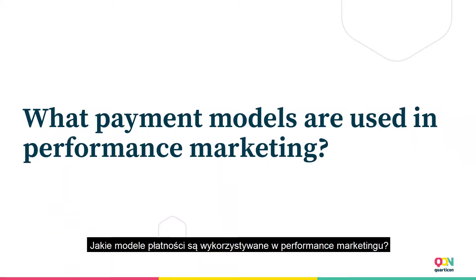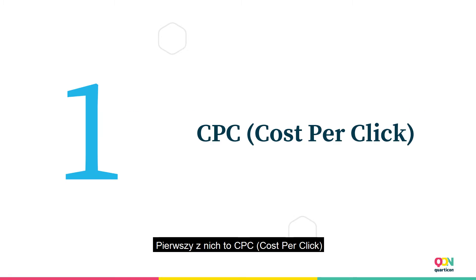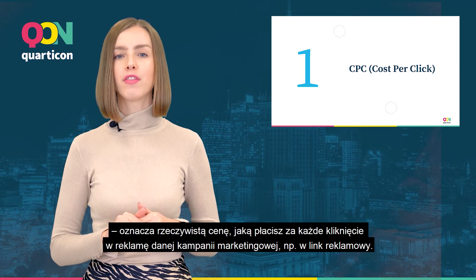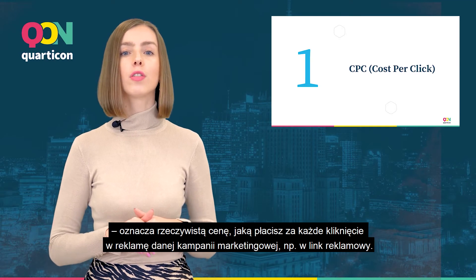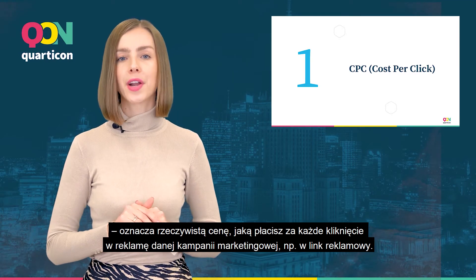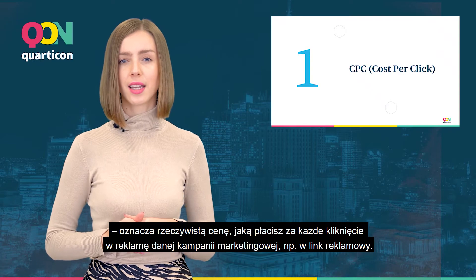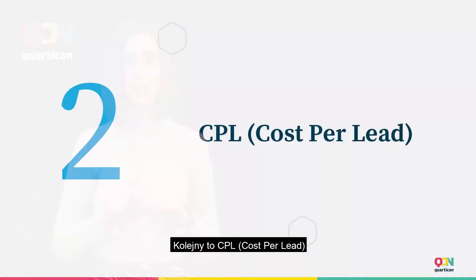What payment models are used in performance marketing? The first one is CPC, cost per click. It means the actual price you pay for each click on pay-per-click marketing campaigns, for example an advertising link. The next one is CPL, cost per lead.